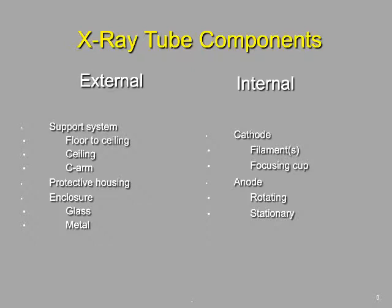Around the x-ray tube there's going to be some kind of support system — either a floor-type, ceiling-type, or a C-arm mobile support system. In addition, it will have protective housing around it. That protective housing serves two purposes: to protect the tube itself, and to protect us from x-rays. It is generally made out of lead, which is the main reason these tubes are so heavy.